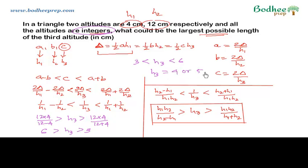The only values which h3 can take are 4 or 5, but we need to find the largest possible such altitude, so 5 would be the answer for this question.